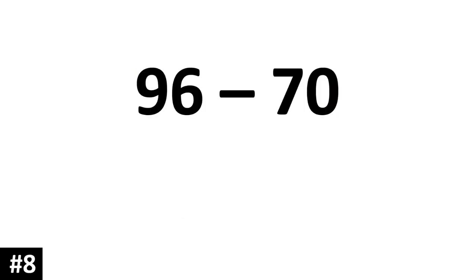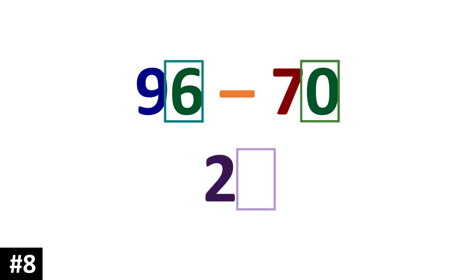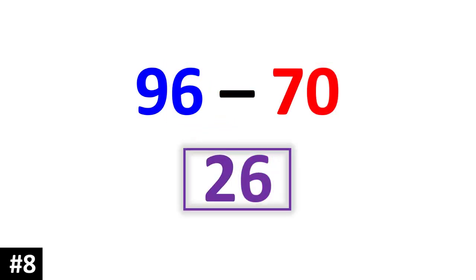How about 96 minus 70? 9 10s minus 7 10s is 2 10s. 6 minus 0 in the ones column gives us 6. So our answer is 26.